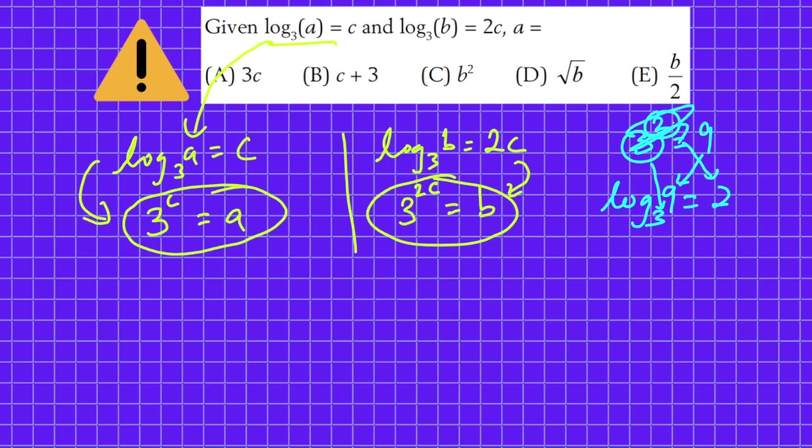Let me write it again so that you can understand it much more easily. 3 squared equals 9, and I have written log of 9 to the base 3 equals 2.